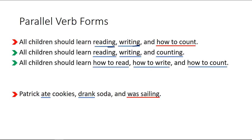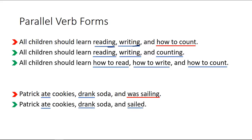Here's another version of parallel verbs: all children should learn how to read, how to write, and how to count. Let's try another one. Patrick ate cookies, drank soda, and was sailing — that's the incorrect version. Versus: Patrick ate cookies, drank soda, and sailed.